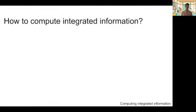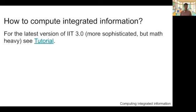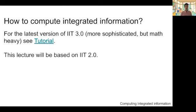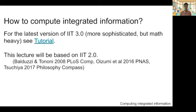So how can we compute integrated information? To be exact, it's best to go to the original paper and the latest version, IIT 3.0, which uses a simple mechanism for explanation, but it's already quite a long tutorial. This week I'll give a lecture based on the previous version called IIT 2.0, because it has an easier way to explain the concepts. These three papers will be most useful if you're interested — my paper in Philosophy Compass doesn't use much math, so that may be the easiest way to understand it.